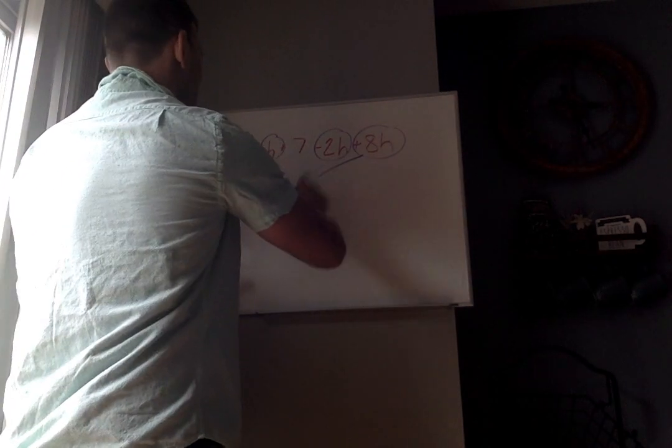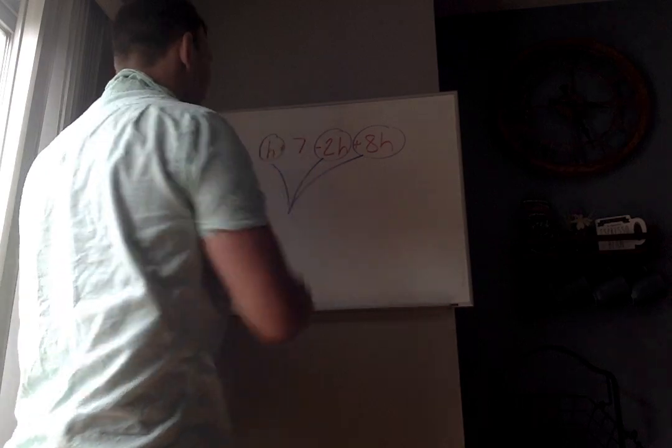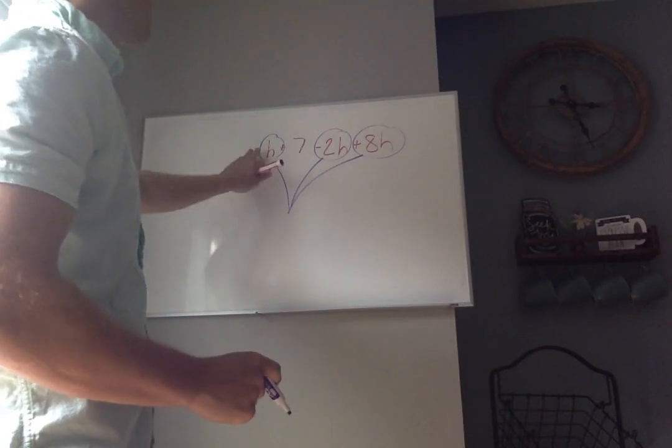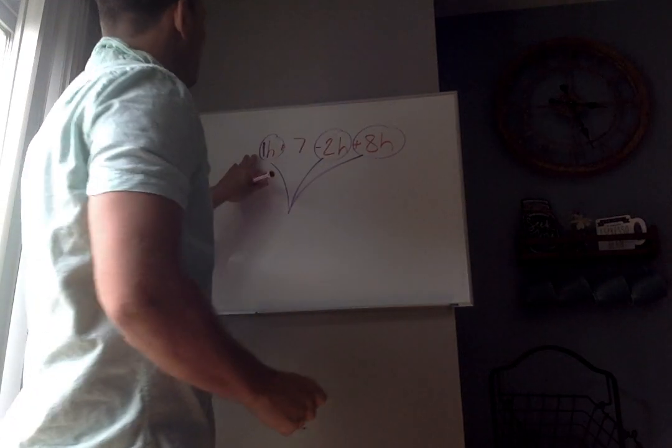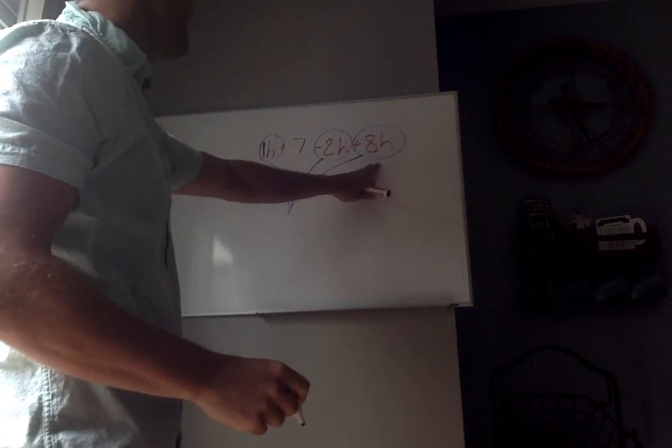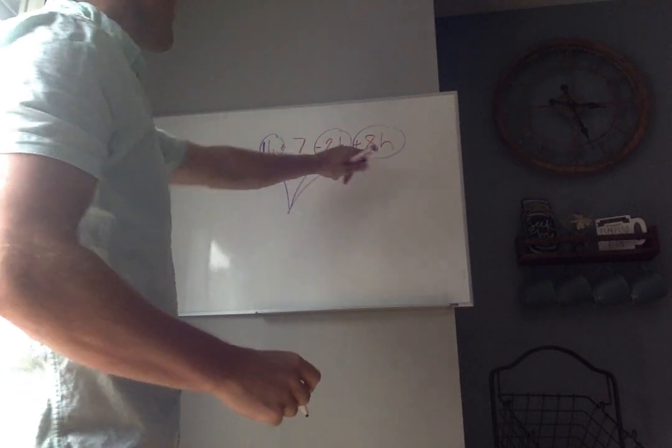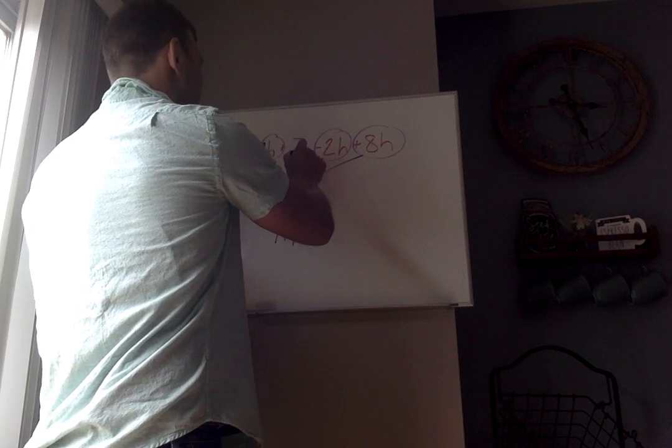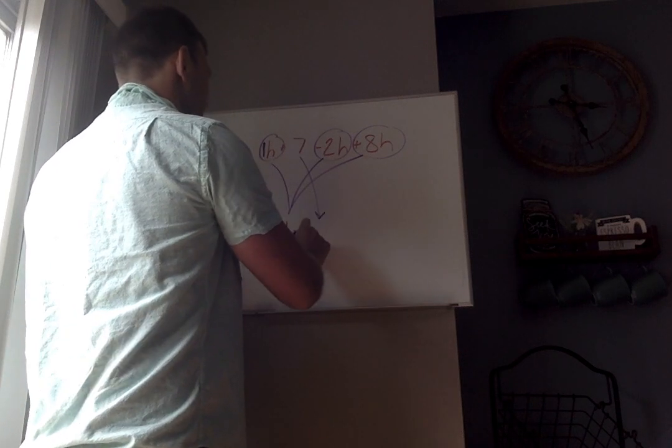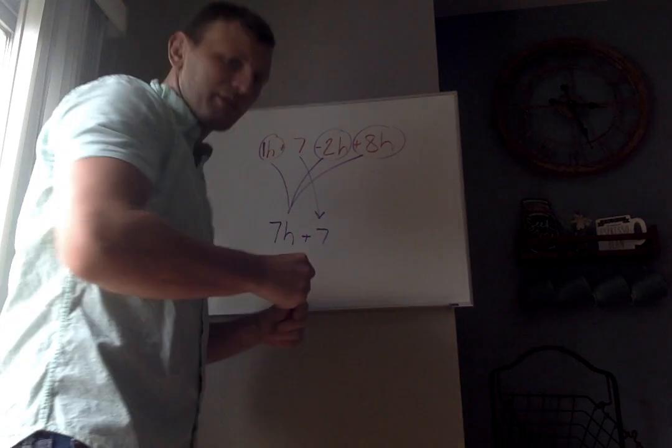So all of these things are going to combine to give me one thing. I'm going to only focus on the coefficient in front, which is the number in front. This guy doesn't have one, so I'm going to put a 1 there. So 1 minus 2 plus 8. I'm going to do 1 plus 8, that's 9, minus 2 is 7. So I have 7h. Now this guy doesn't have anything, so he just comes right down. So it's 7h plus 7.